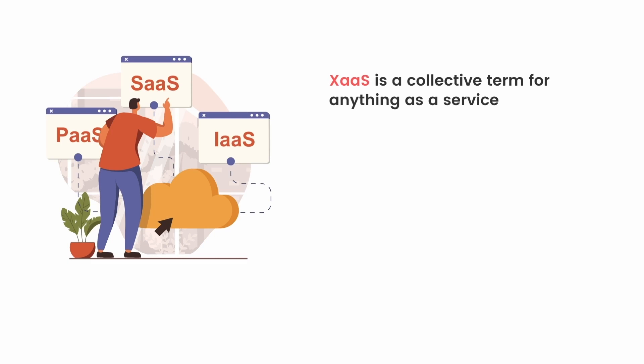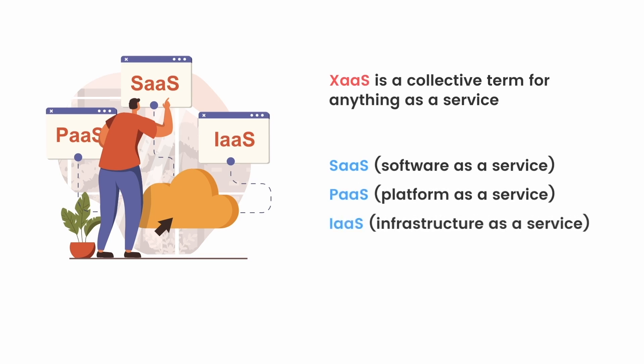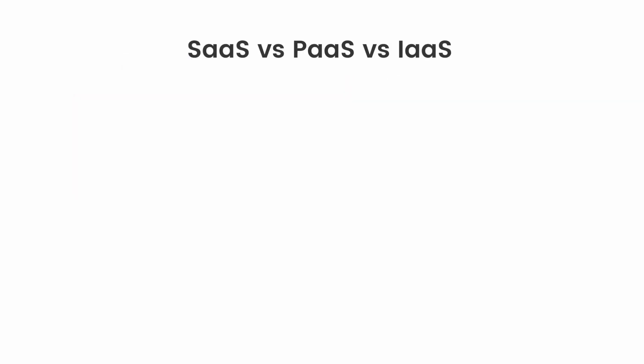XaaS is a collective term for Anything as a Service. This means that it includes Software as a Service, Platform as a Service, and Infrastructure as a Service as well. Let's look at the differences between these three service offerings.